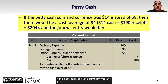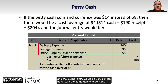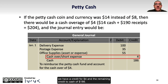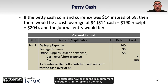If the petty cash coin and currency was $14 instead of $8, then there would be a cash overage of $4. Remember: $14 in cash plus $190 in receipts equals $204. The journal entry would be very similar, again with the same debits to delivery, postage, and office supplies accounts, but this time instead of a debit to cash over short for $2, we have a credit for $4 and the remaining credit to cash of $186. The custodian cashes the reimbursement check of $186 to replenish the fund, and the total petty cash is now $14 plus $186, equaling $200.